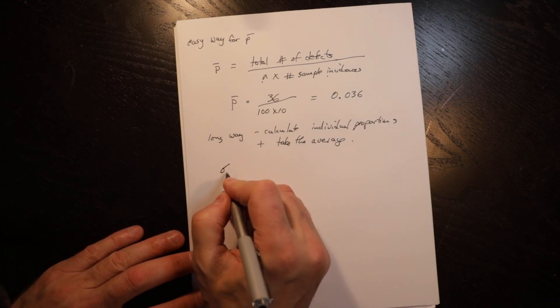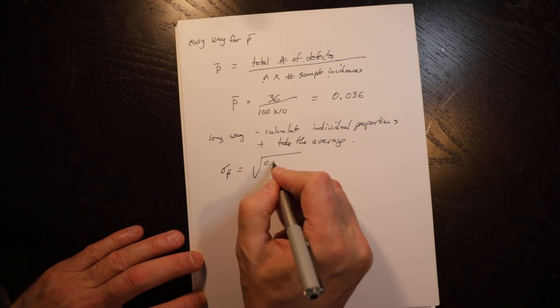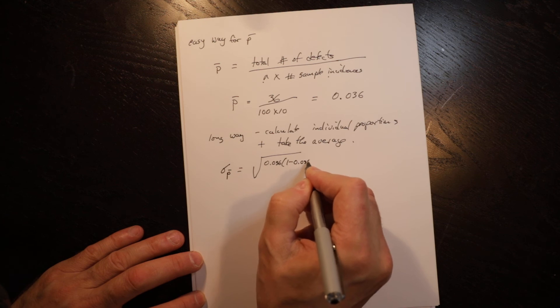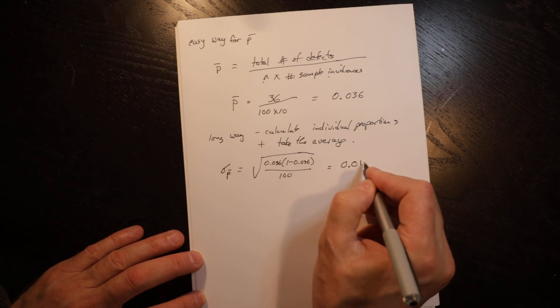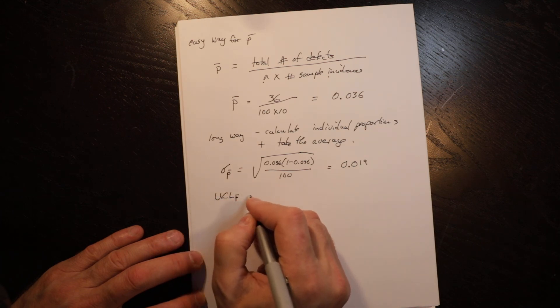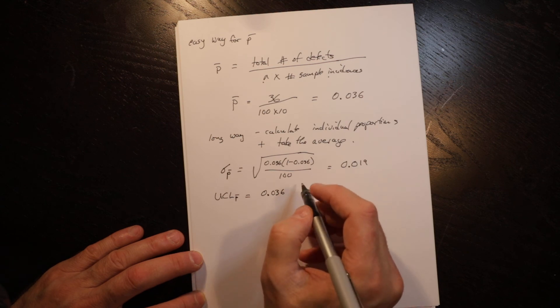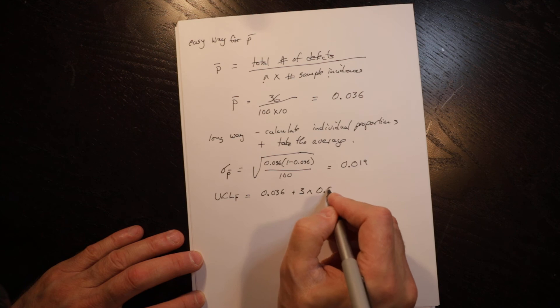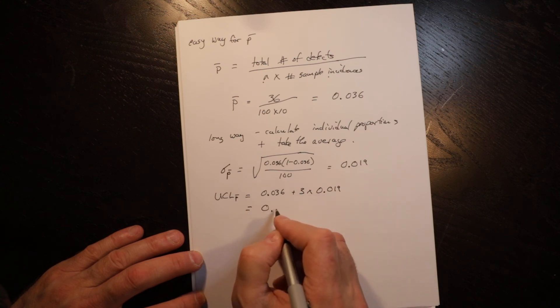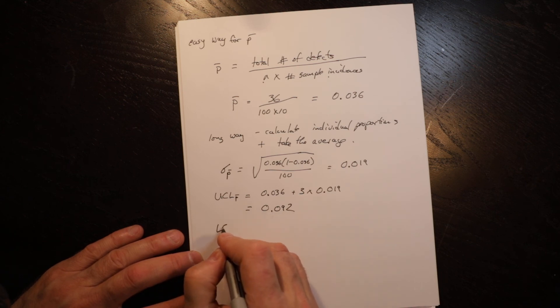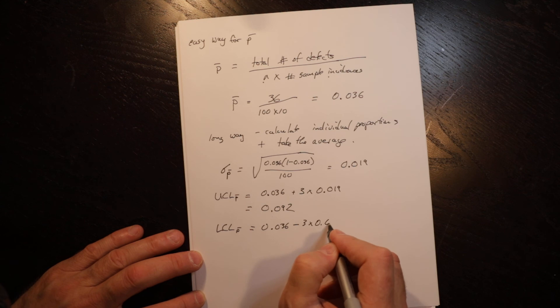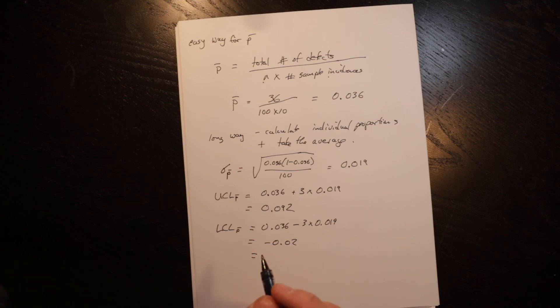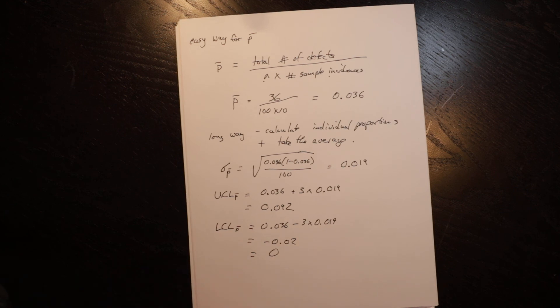So sigma P bar is equal to the square root of 0.036 times 1 minus 0.036 divided by 100, which is N, equals 0.019. So the upper control limit for P bar is equal to 0.036 plus 3 times 0.019 equals 0.092. And the lower control limit for P bar is equal to 0.036 minus 3 times 0.019 equals negative 0.02. And as it was with the count, you can't go below zero. You put zero here.